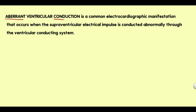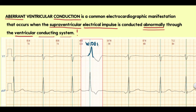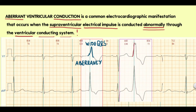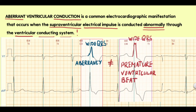Aberrant ventricular conduction is a common electrocardiographic manifestation that occurs when the supraventricular electrical impulse is conducted abnormally through the ventricular conduction system. This results in a wide QRS complex that may be confused with a ventricular ectopic beat. This differentiation is important because the treatment and prognosis are quite different.